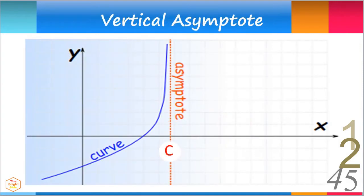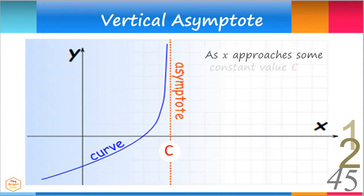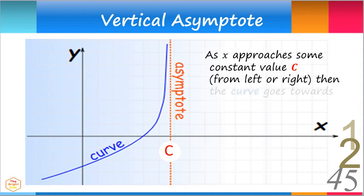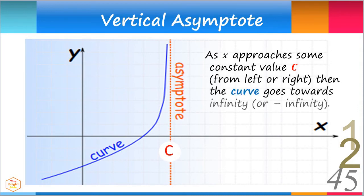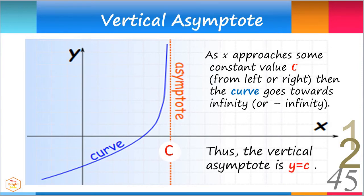Let's look at the vertical asymptote. As x approaches some constant value c from the left or right, the curve goes towards infinity or negative infinity. Thus, the vertical asymptote is x equals c.